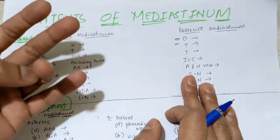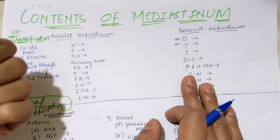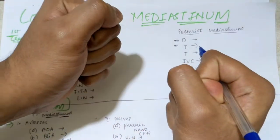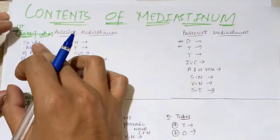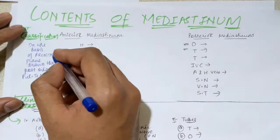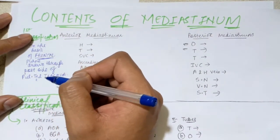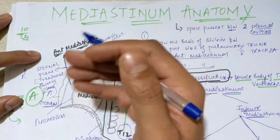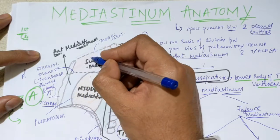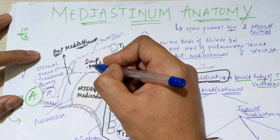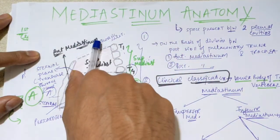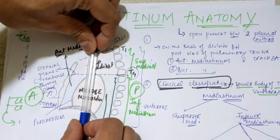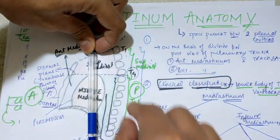The mediastinum is like your popliteal fossa or cubital fossa you have studied — they also contain arteries, nerves, lymph nodes and some special features. Like that, the mediastinum is also a space between our two pleural cavities, that is between our lungs. We are in the section of the first classification — anterior and posterior mediastinum — classified on the basis of a frontal plane drawn through the posterior side of your pulmonary trunk and your trachea.